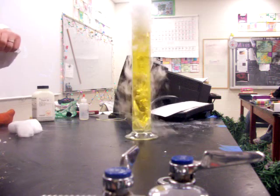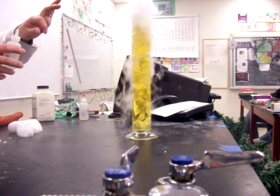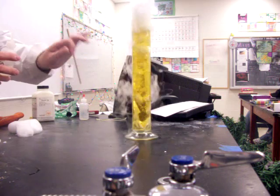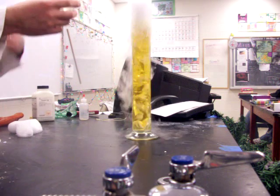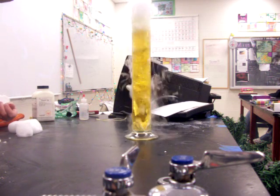To encourage it to go all the way to the acidic range, I'm going to add a little bit of acid. Carbon dioxide forms a weak acid in the water, so I'm going to add a little bit of a strong acid to push the color change all the way into the acid range.